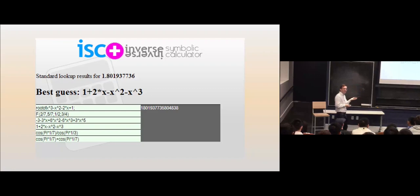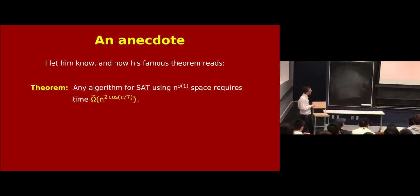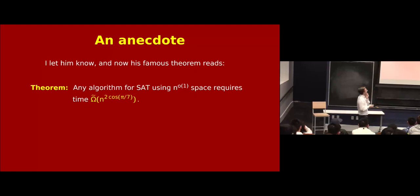It's somewhat sophisticated. And it's like, hey, Ryan, check it out. It's 2 cos pi over 7. And OK, once you know that, you can use some elementary math to prove it. And so, you know, his restated theorem looks like this. Any algorithm sublinear space algorithm for SAT requires time n to the 2 cos pi over 7. And isn't that much cooler looking? It's pretty nice. So that's the usage of that.